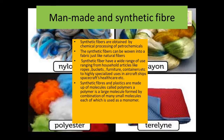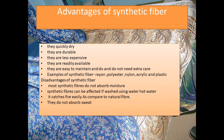Now let's talk about manmade and synthetic fibers. Synthetic fibers are obtained by chemical processing of petrochemicals. Synthetic fibers can be woven into fabric just like natural fibers and have a wide range of uses — from household articles like ropes, buckets, furniture, and containers to highly specialized uses in aircraft, ships, spacecraft, and healthcare. Synthetic fibers and plastics are made up of molecules called polymers. A polymer is a large molecule formed by a combination of small molecules called monomers.